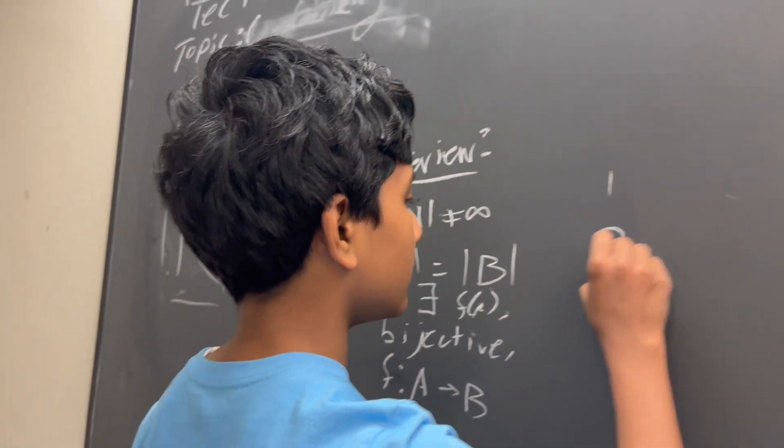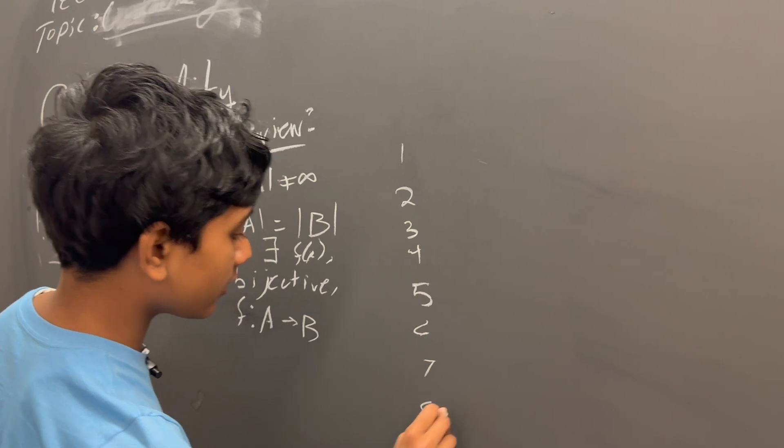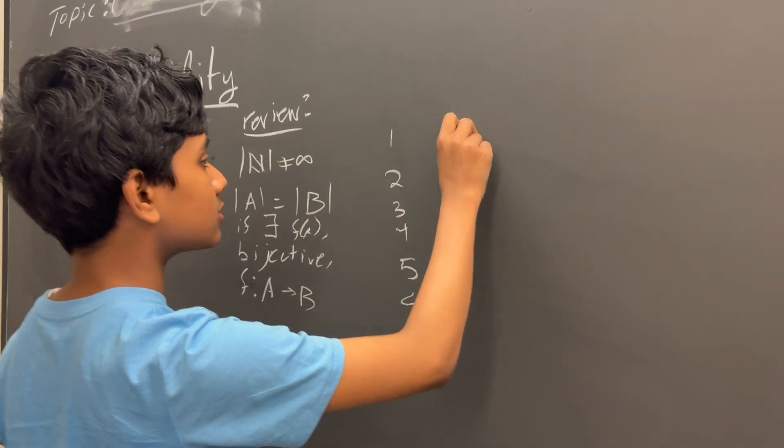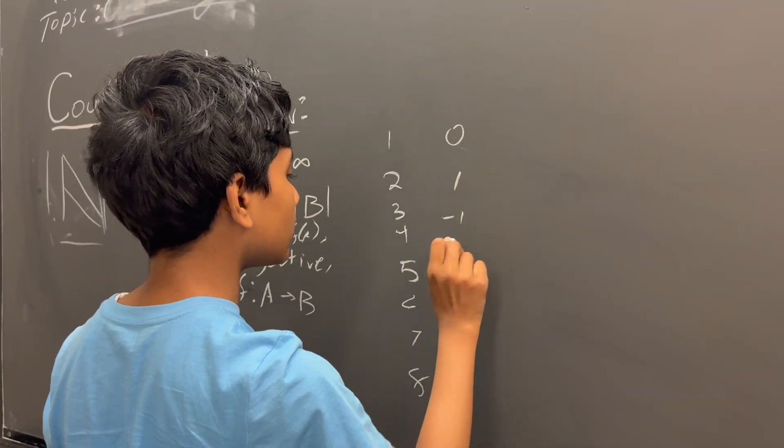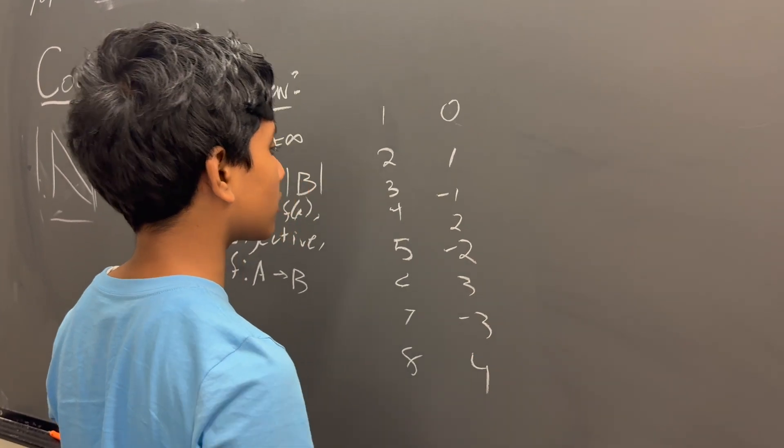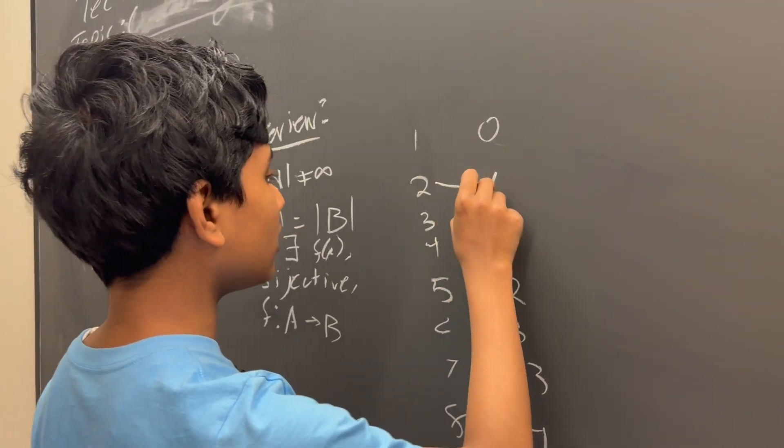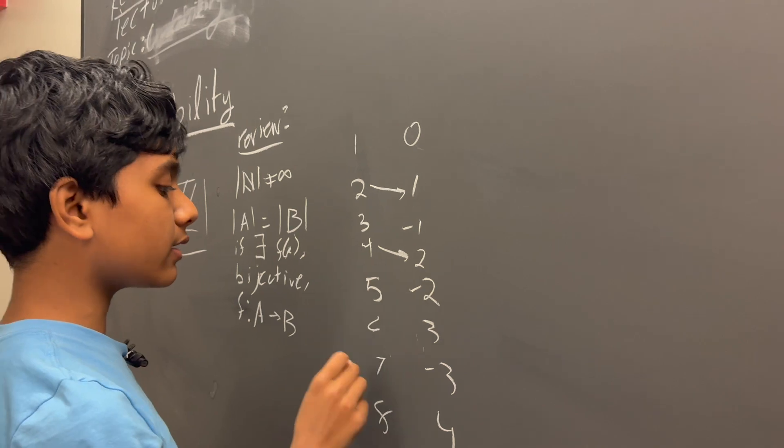One example is the natural numbers and integers. We have 1, 2, 3, 4, 5, 6, 7, 8. We start with 0 over here. 1, minus 1, 2, minus 2, 3, minus 3, 4, minus 4. You can see we have to define it piecewise, but it's still a bijective function because both of the piecewise functions are bijective.